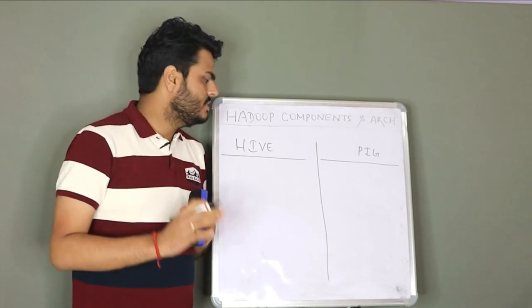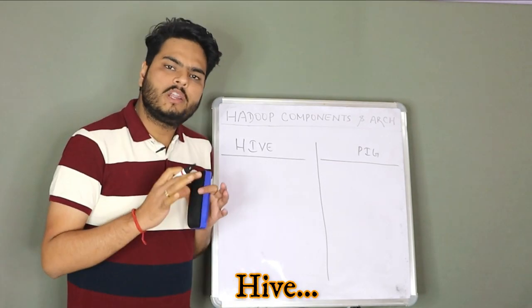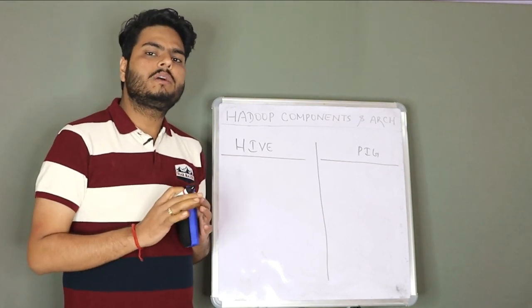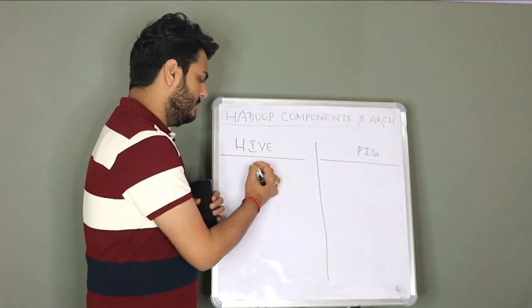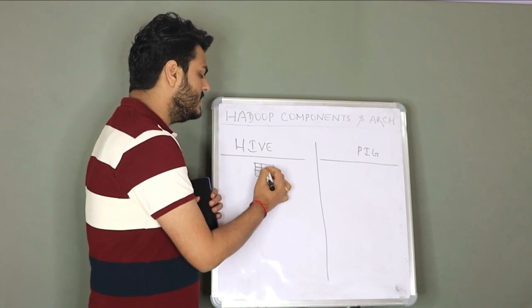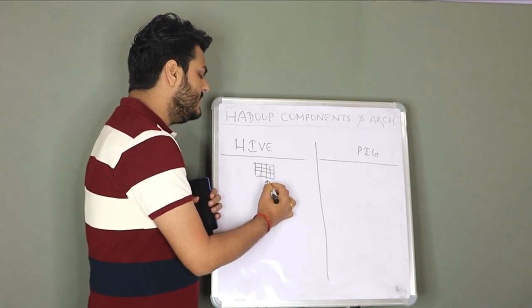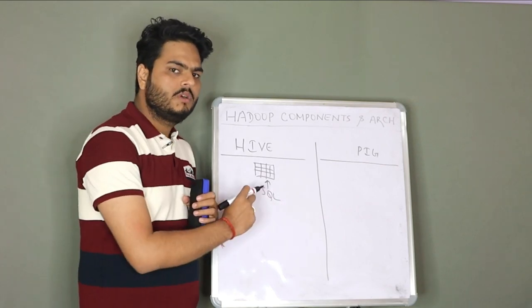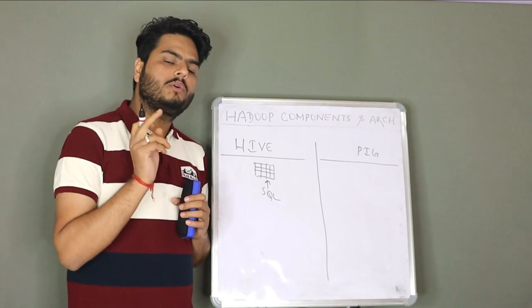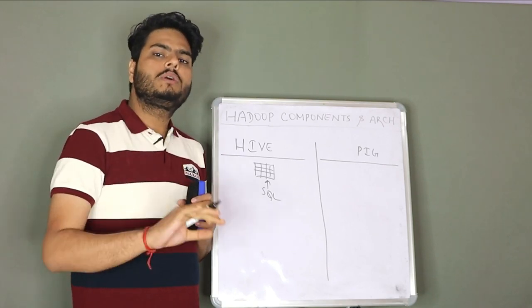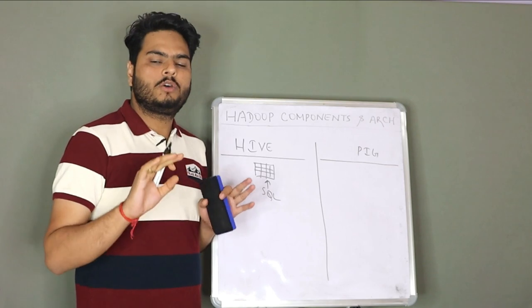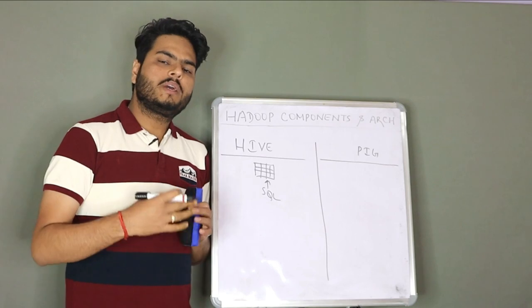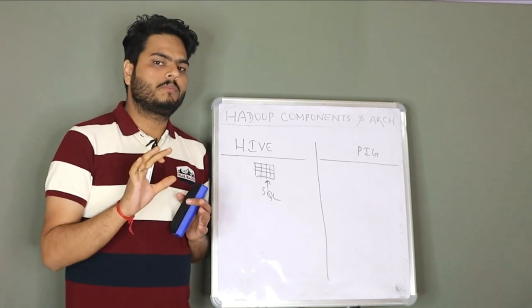So what is Hive? Hive is first of all a RDBMS kind of system on top of Hadoop. When I say RDBMS, that is nothing but data in tabular form. Data will be kept in rows and columns and you can write a SQL query and fetch the data. That is the job of Hive. Hive is a savior for all those people who do not want to get into Java part of entire Hadoop ecosystem. Hive is just like a SQL engine where you write SQL queries and get the output.